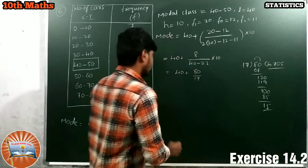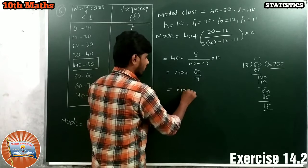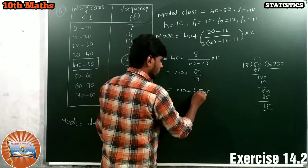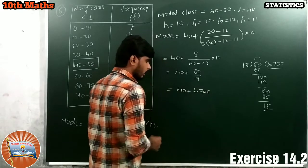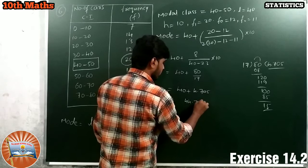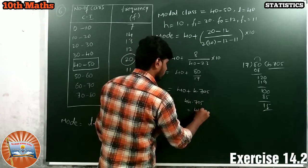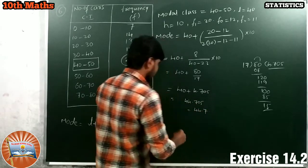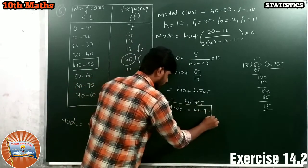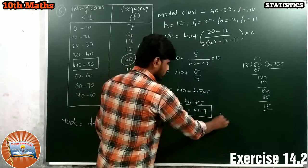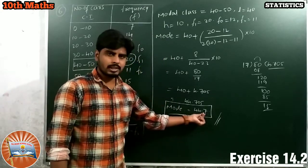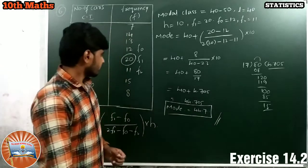Now, 40 plus 4.705, we stop here, up to 3 decimals only. What is 44.705? We take 44.7, this is the mode. The mode is 44.7.